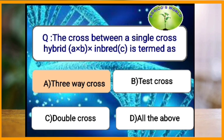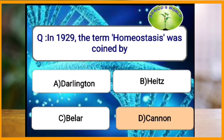The cross between a single cross (A cross B) and an inbred line is termed as what? The cross between (A cross B) the whole with (A cross C) is known as a three-way cross. The next question: in 1929 the term homeostasis was given by whom? The term homeostasis was given by Cannon.